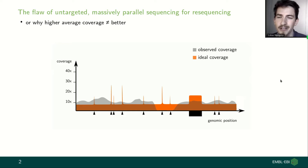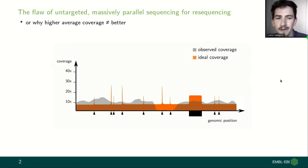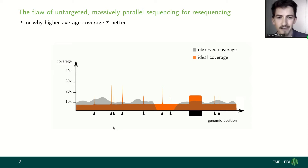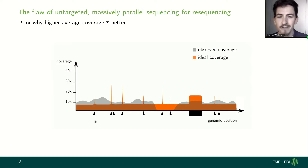First I want to talk about the flaw of untargeted massively parallel sequencing in the context of resequencing experiments, or to phrase it differently, why higher average coverage is not necessarily better coverage. If we think about a resequencing experiment, we usually have some reference genome and what we're interested in is capturing the variation of the genome in our sample — this variation could be SNPs or larger variants such as CNVs, signified here by black triangles or bigger black boxes.